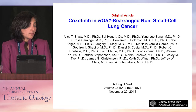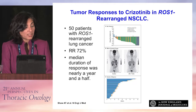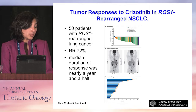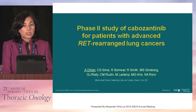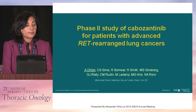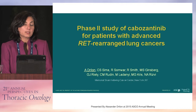Briefly on ROS1: crizotinib has ROS1 activity as well. In this series, 50 patients were treated with response rates of 72%. There is still a lot to learn about resistance. A couple of resistance mutations have been characterized for ROS1. Lorlatinib has an arm specifically for ROS1 in the phase 2 trial, offering opportunity to study mechanisms of resistance as patients progress on crizotinib.